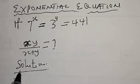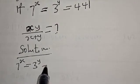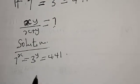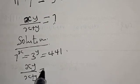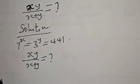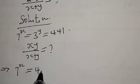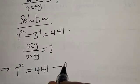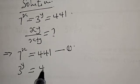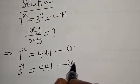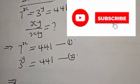We have 7 raised to power x equal to 3 raised to power y equal to 441. We want to find xy over x plus y. This implies that 7 raised to power x is equal to 441 — equation 1 — and 3 raised to power y is equal to 441 — equation 2.